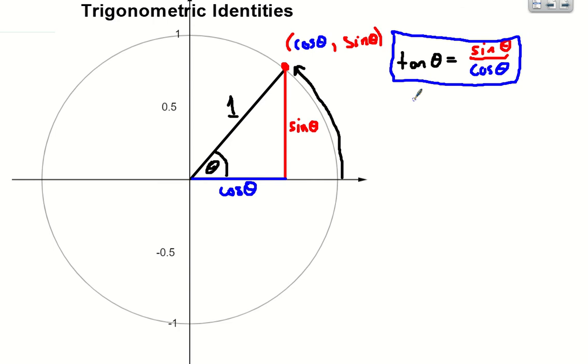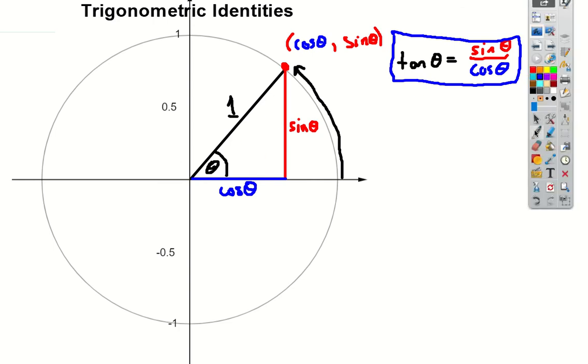OK. Right, secondly, what else can we see in this picture? Well, I've got a right-angled triangle wherever I put this coordinate. There's the right angle there. And what do we know about the sides of a right-angled triangle? Well, Pythagoras.